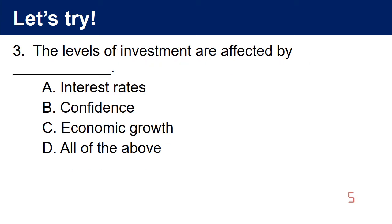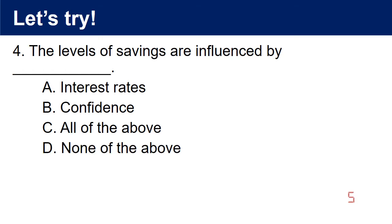Question 3: The levels of investment are affected by — A. Interest rates. B. Confidence. C. Economic growth. D. All of the above. The answer is D. Question 4: The levels of savings are influenced by — A. Interest rates. B. Confidence. C. All of the above. D. None of the above. The answer is C. All of the above.